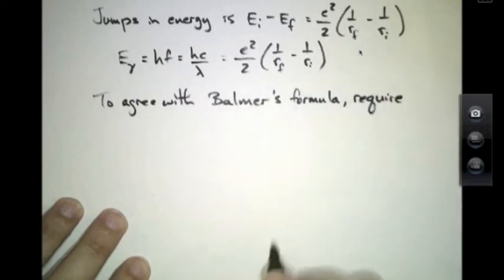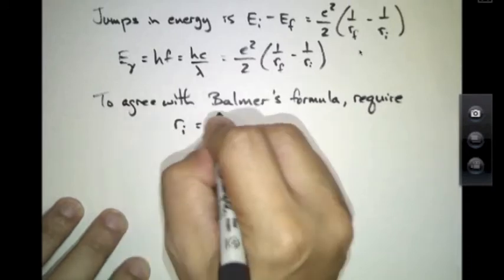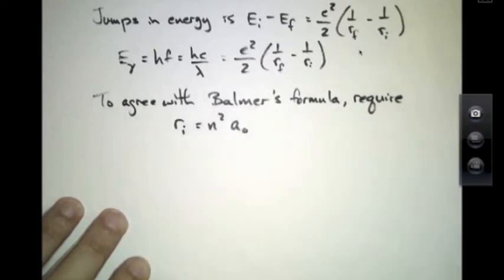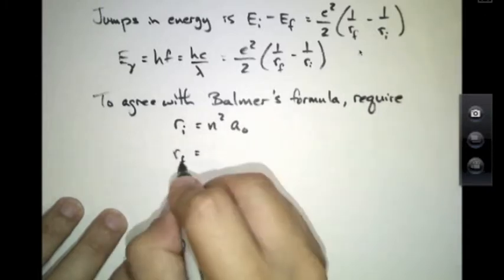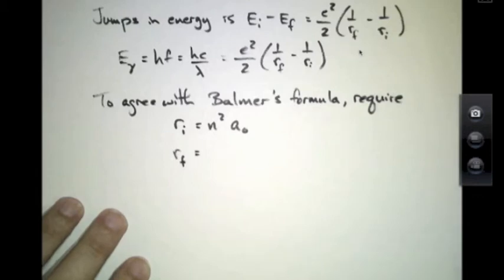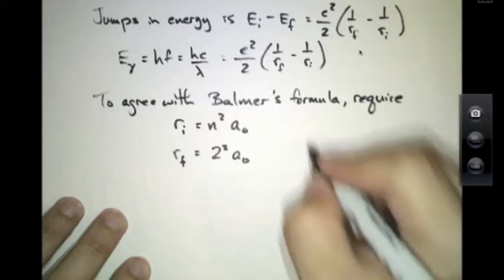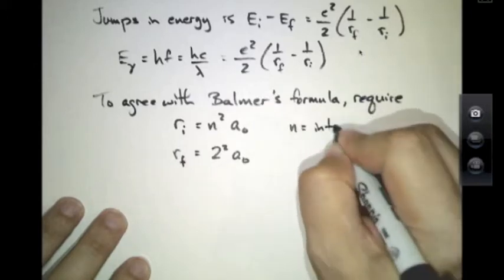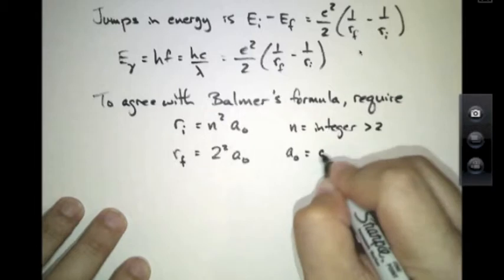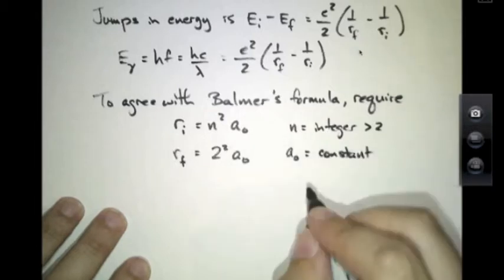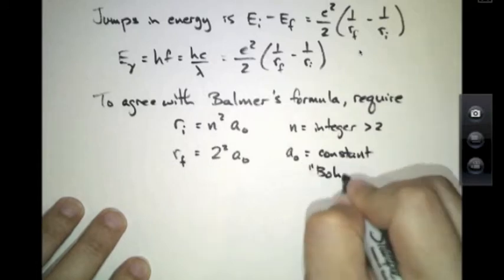He required that each of the allowed radii in his model had the form of an integer squared times some constant A₀, and the final radius in which all these electrons would land was the particular case where that integer was equal to 2. In this expression, n is an integer greater than 2, and A₀ is a constant yet to be determined.